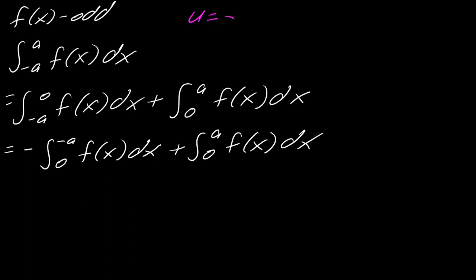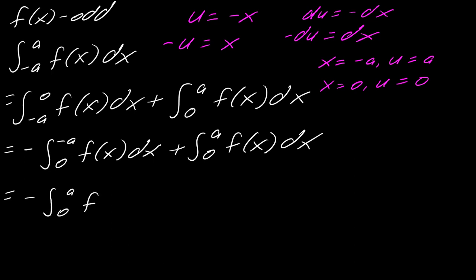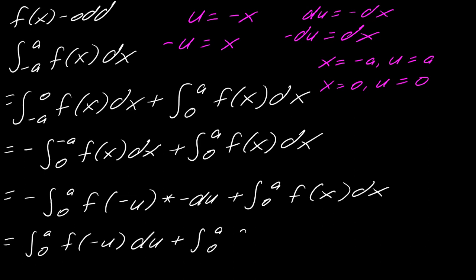Same set of tricks from before. My u is still negative x. Therefore, my negative u will equal x. Therefore, my du is negative dx. Therefore, my negative du is dx. All the same stuff. And then just like before, if x is negative a, then u will equal positive a. And if x equals 0, then u will equal 0. So all that stuff is all the same. When I set this up, I'll change my limits of integration. So now this goes from 0 to a. This will become f of negative u, and then all of this times negative du. The other part is not changing at all.